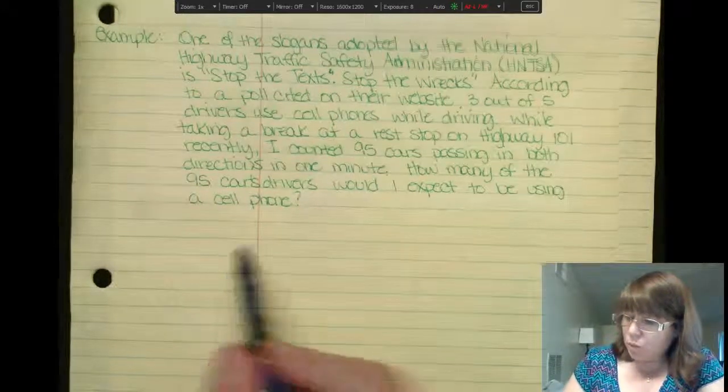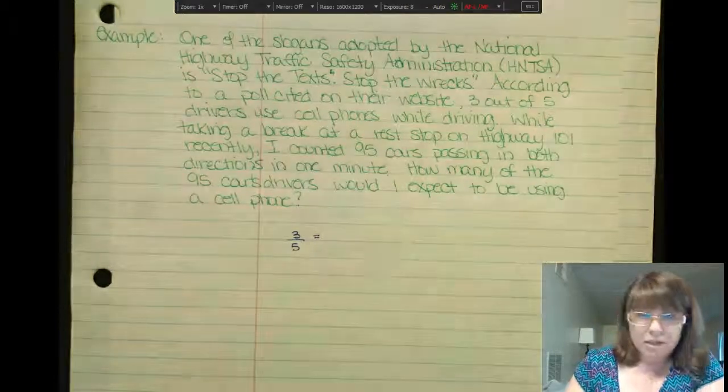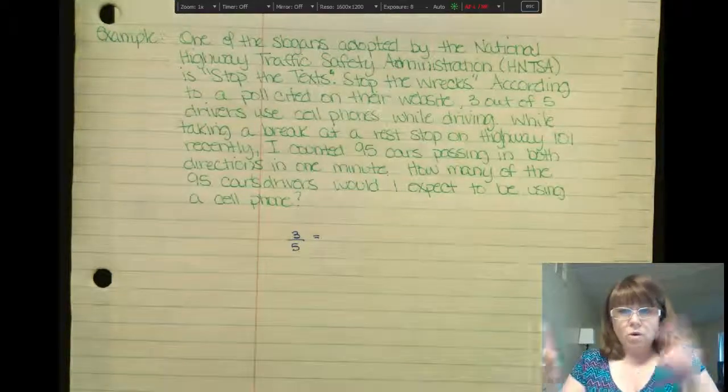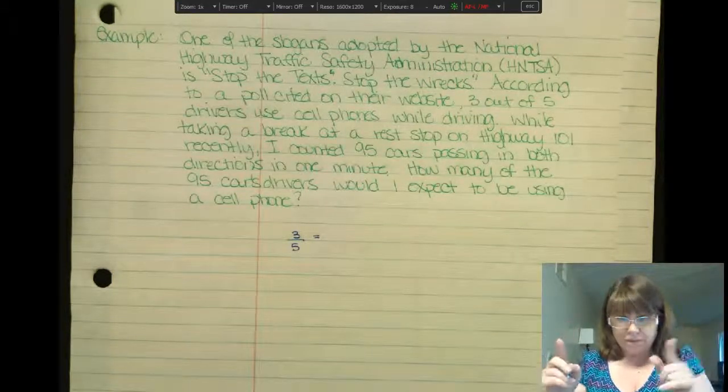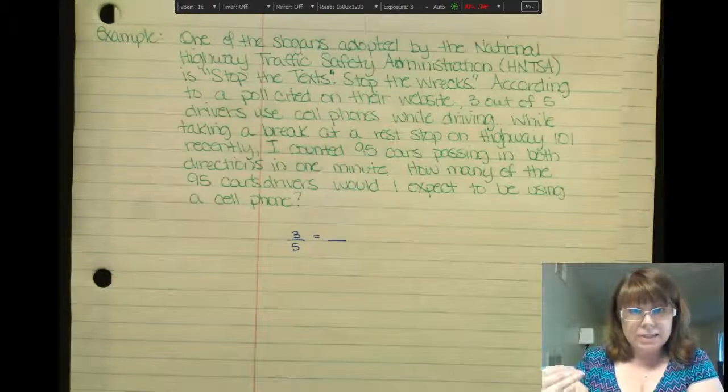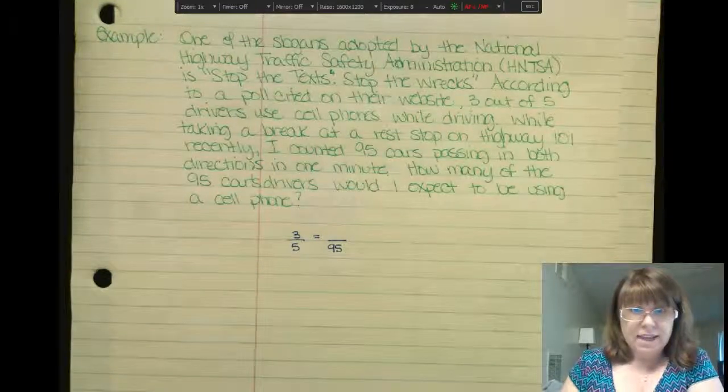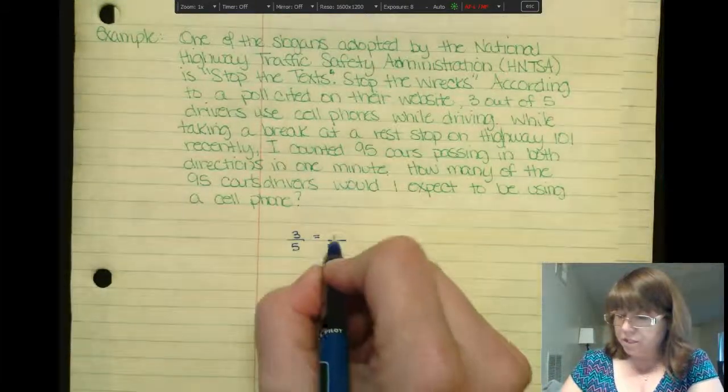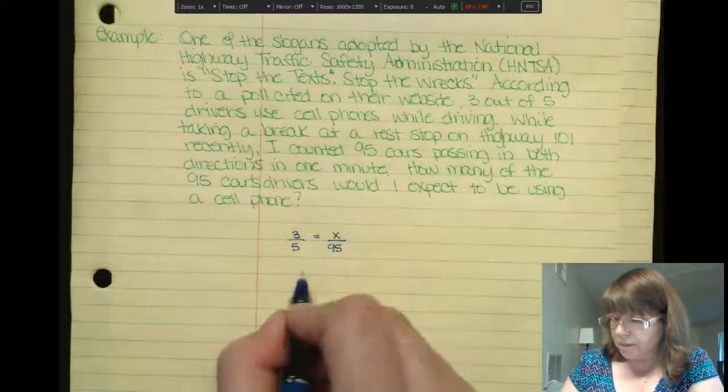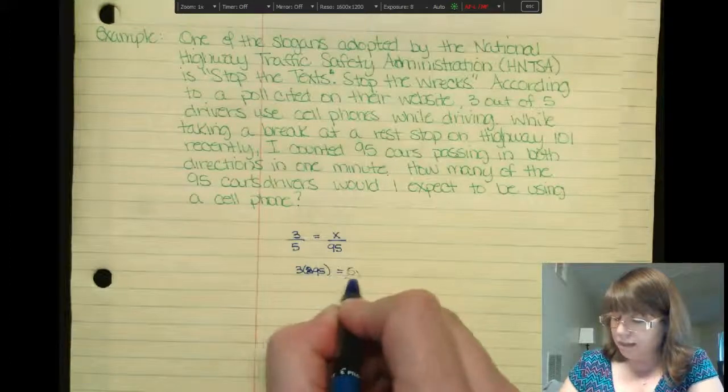Now, I need to take the original ratio. The original ratio is 3 to 5. The whole is the 5. Those are, quote unquote, all the drivers. And out of all the drivers, 3 of them were talking on the phone or using their cell phone. Now, in my situation, I had a total of 95 cars. And I don't know how many were using their cell phone, but I'm going to predict how many were using their cell phone. So 3 times 95 should equal 5x. 3 times 95 is 285.